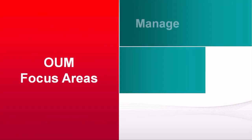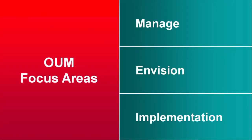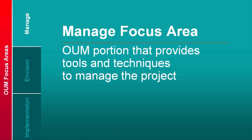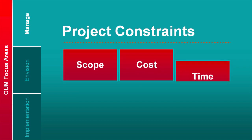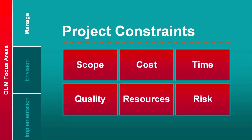It includes three focus areas: the Manage focus area, the Envision focus area, and the Implementation focus area. The Manage focus area is the portion of Oracle Unified Method that provides tools and technologies to manage the project, taking care of the six project constraints that exist on every project: scope, cost, time, quality, resources, and risk.